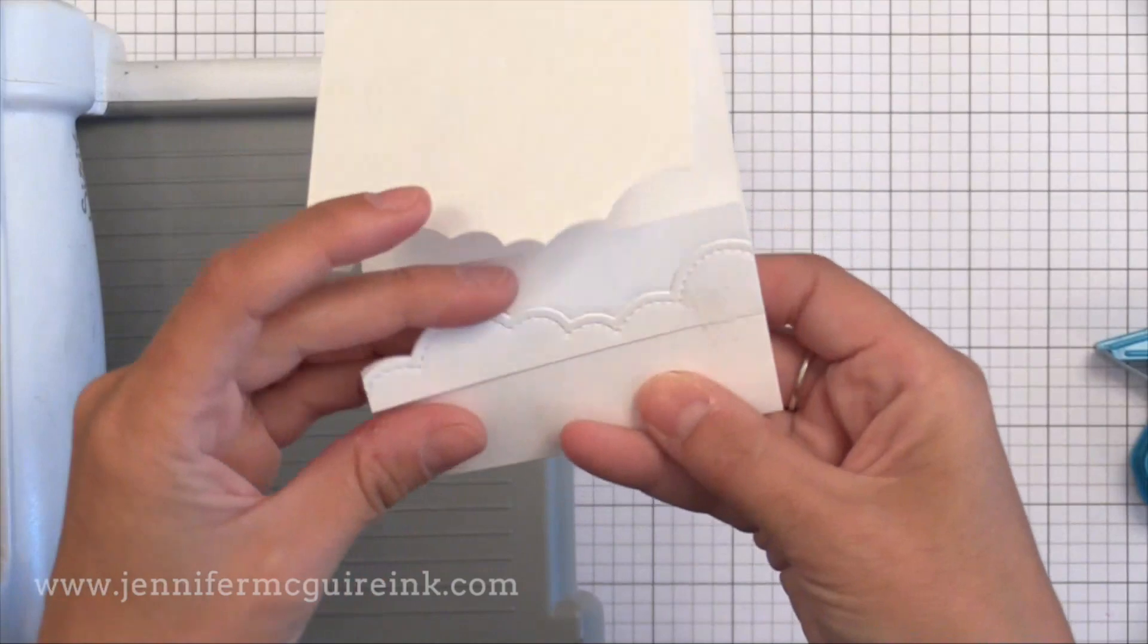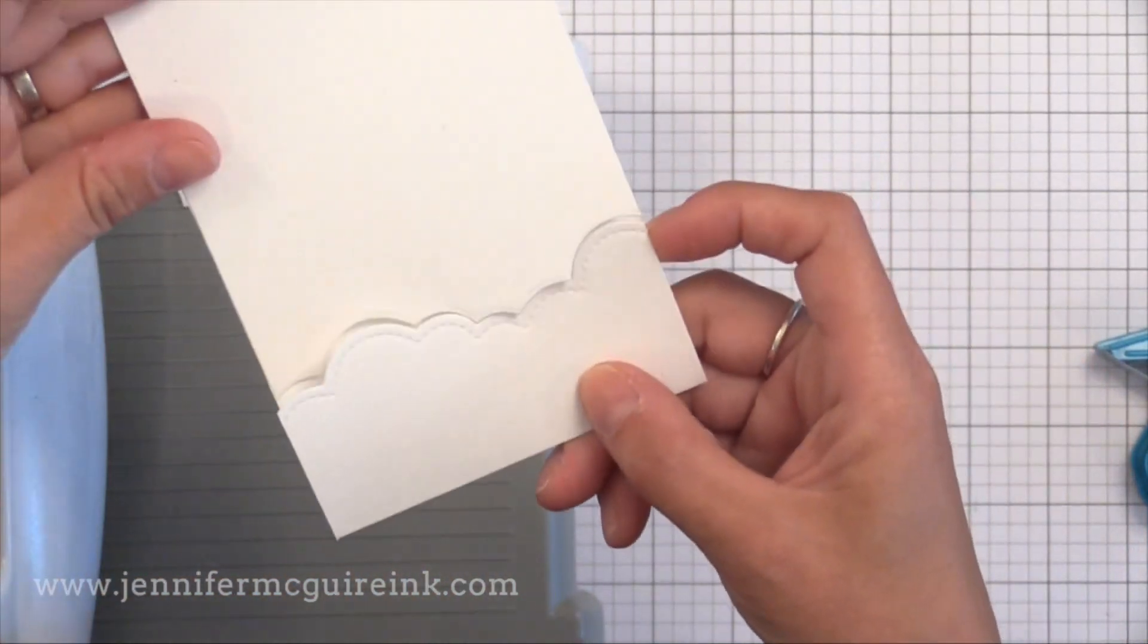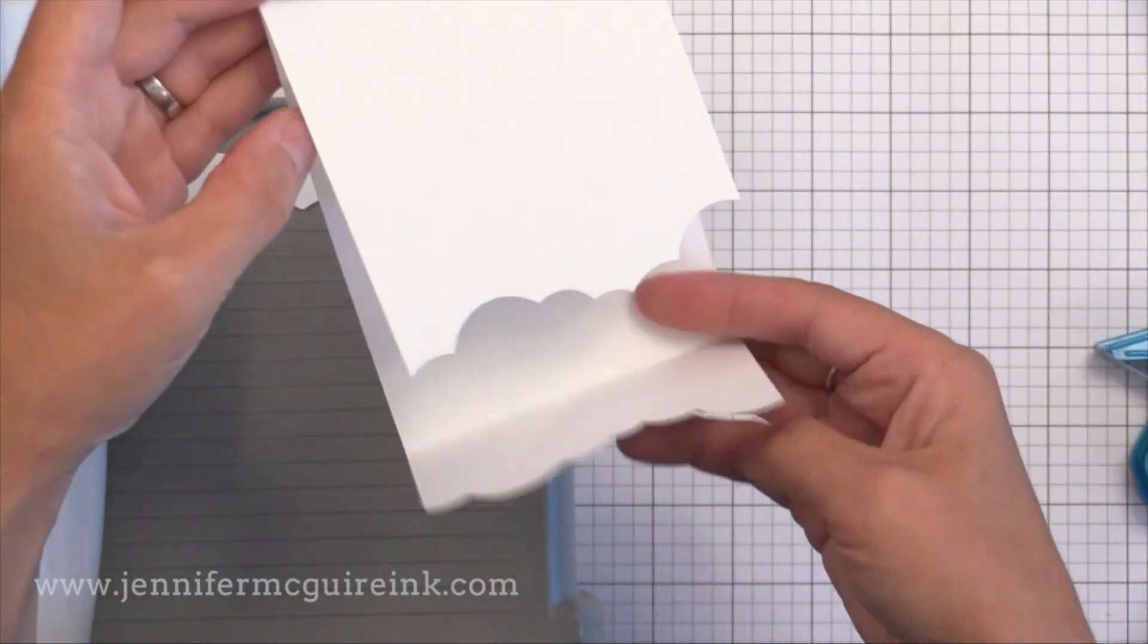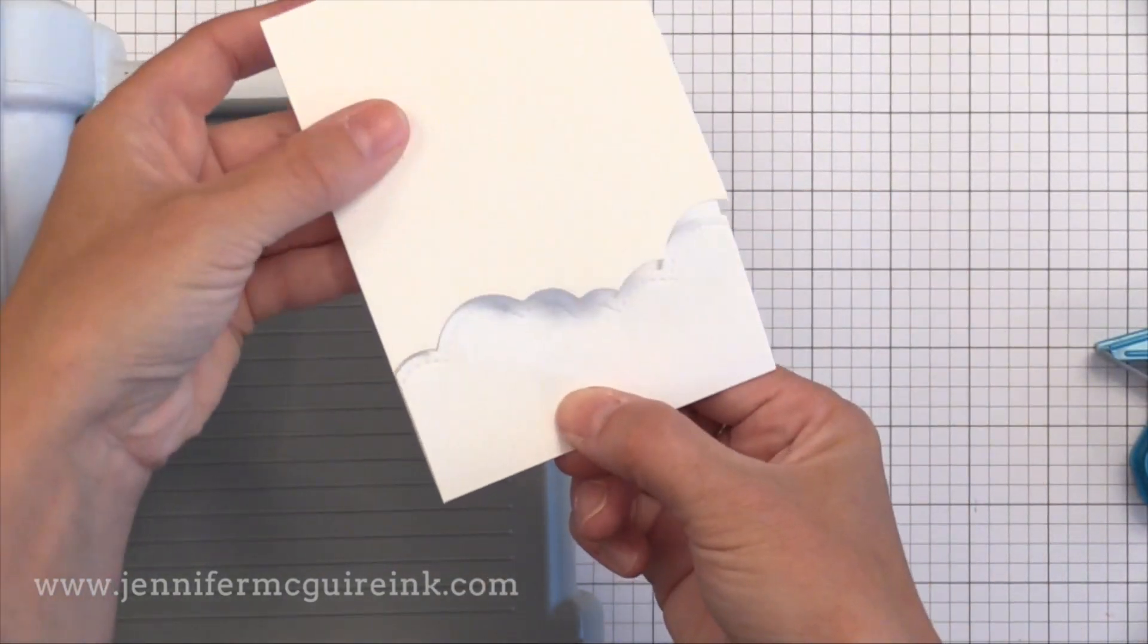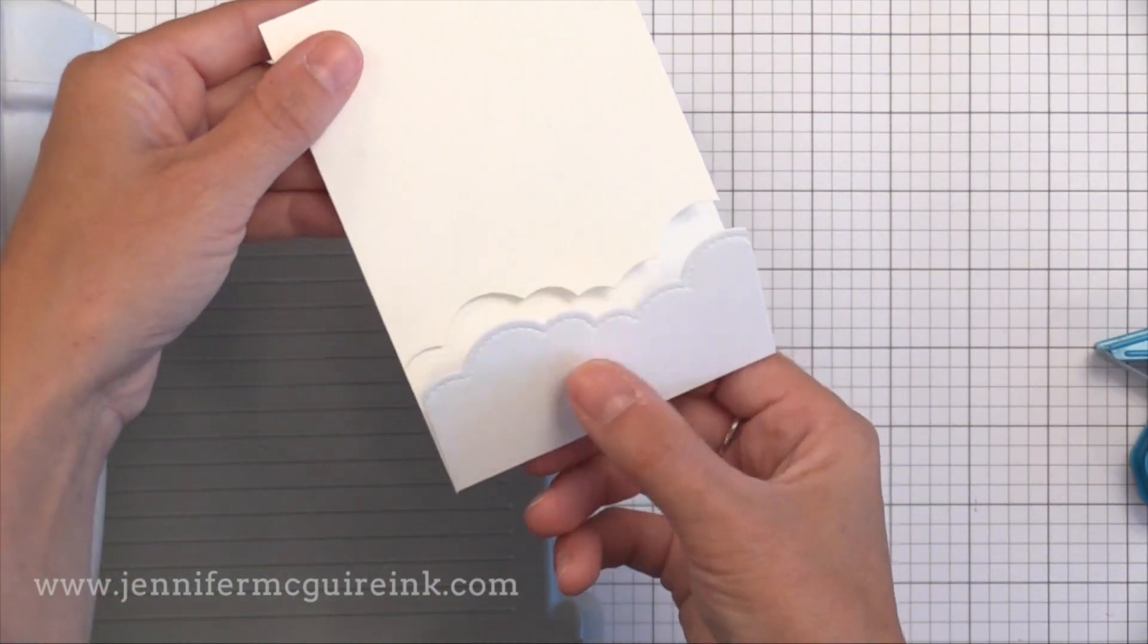I just wanted to show you you could use pretty much any border die for this. It would be fun to use a grass border die or a scallop. Anything you want. And check that out. You get a great gatefold design. So fast and so easy. And such a unique way to make a card instead of just the traditional opening card.